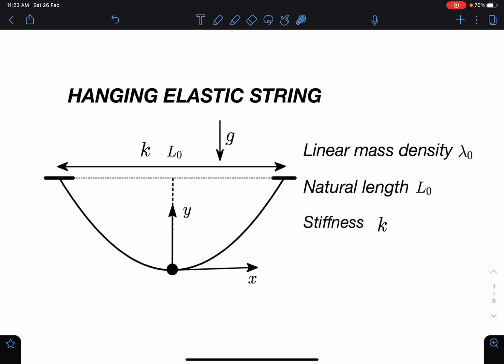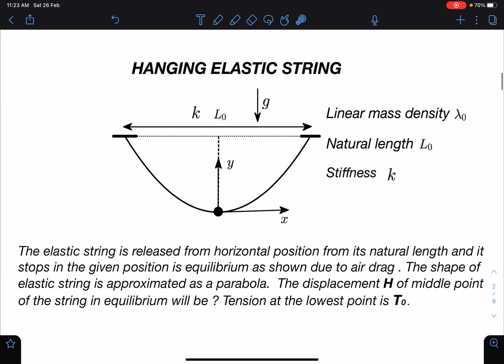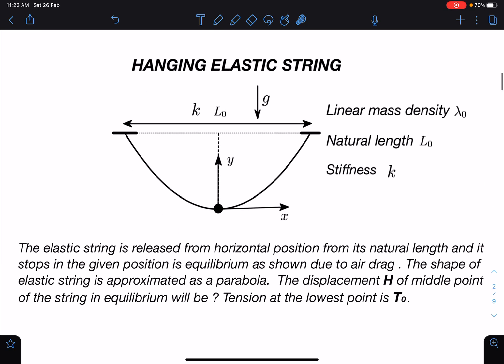Here is the problem statement: The elastic string is released from horizontal position from its natural length and it stops in the given position at equilibrium as shown in the figure due to air drag. The shape of the elastic string is approximated as a parabola.